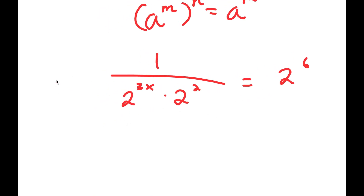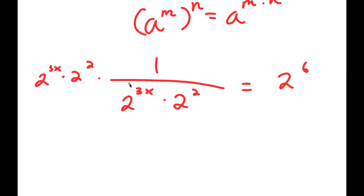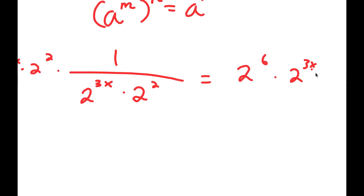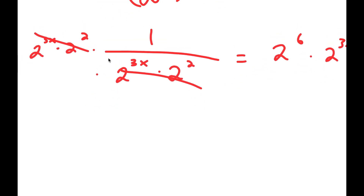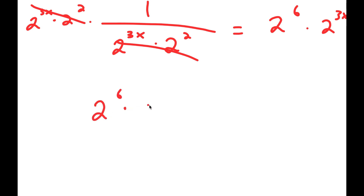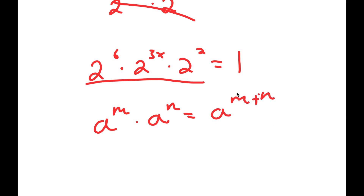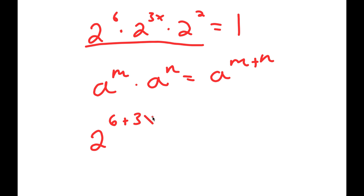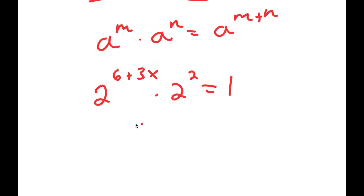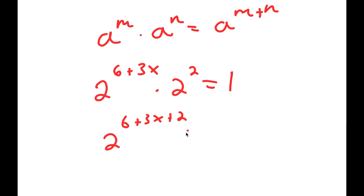I can multiply both sides by 2 to the power of 3x times 2 squared. These four terms cancel out, and I'm left with 2 to the power of 6 times 2 to the power of 3x times 2 squared is equal to 1. Because all these powers have the same base — if I have a to the power of m times a to the power of n, this equals a to the power of m plus n — so 2 to the power of 6 times 2 to the power of 3x times 2 squared equals 2 to the power of 6 plus 3x plus 2 is equal to 1.